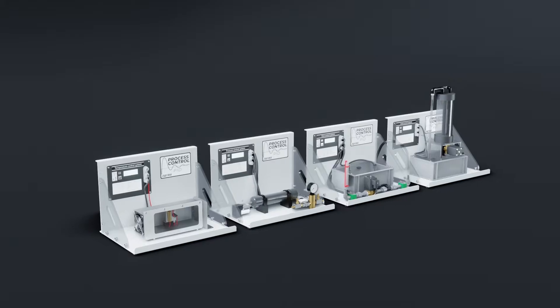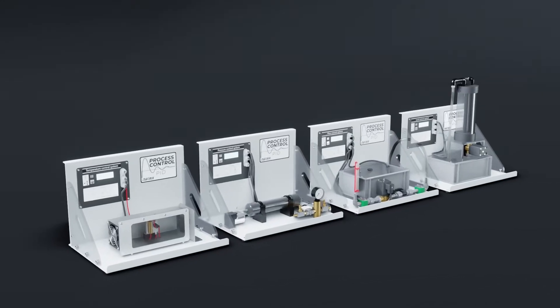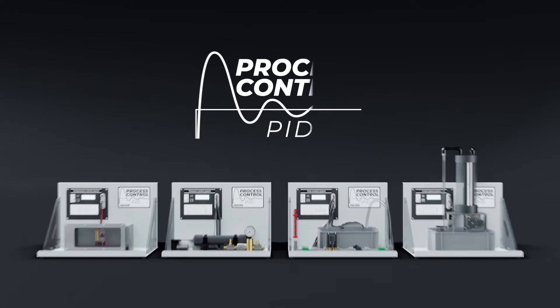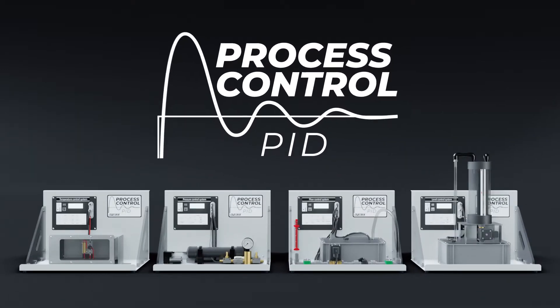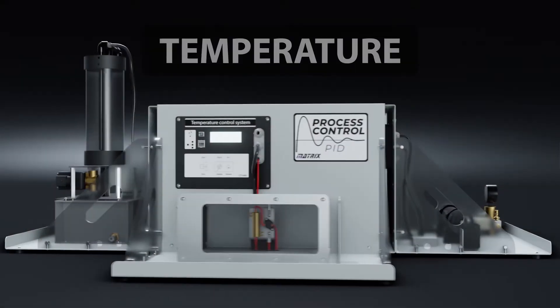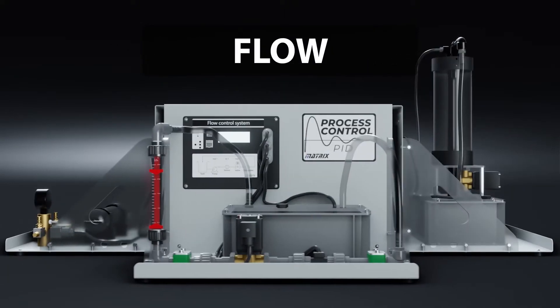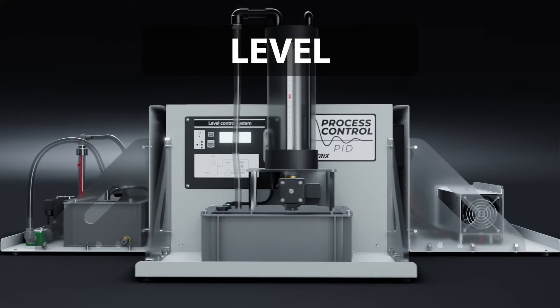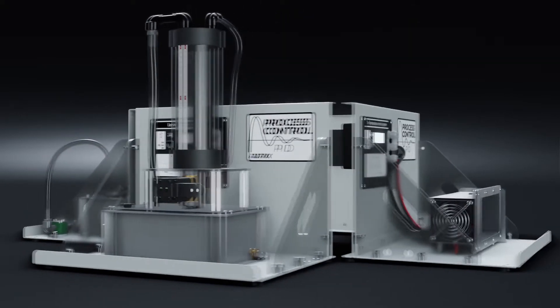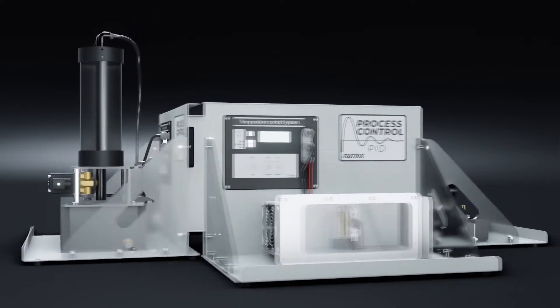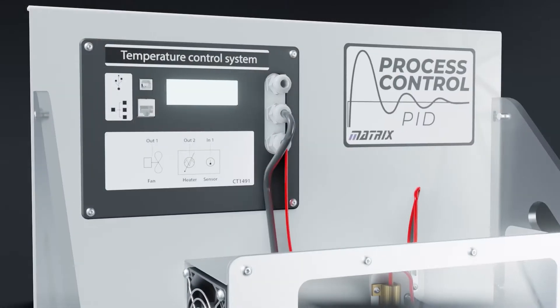The Matrix Process Control Range is an affordable way for students to study the principles of control in industrial processes. In the range there are four models: temperature, pressure, liquid flow, and liquid level. Each model consists of a rugged portable housing containing all the apparatus needed.